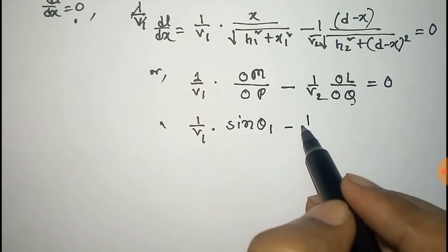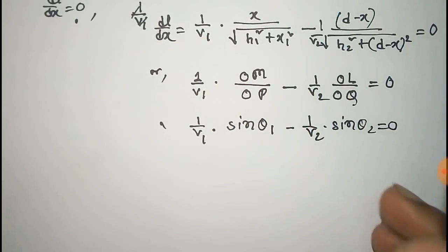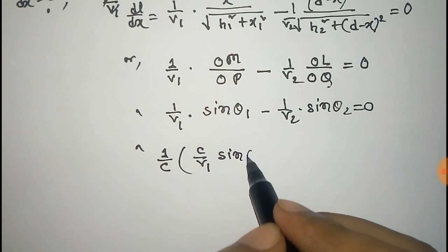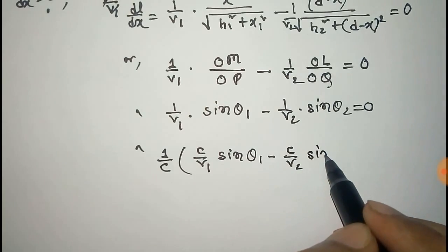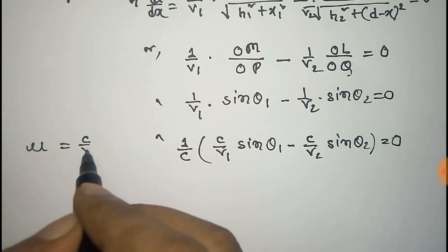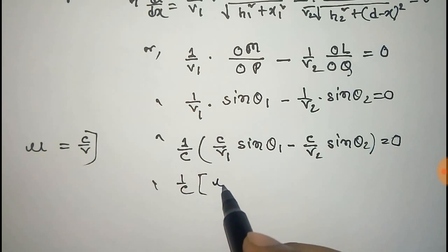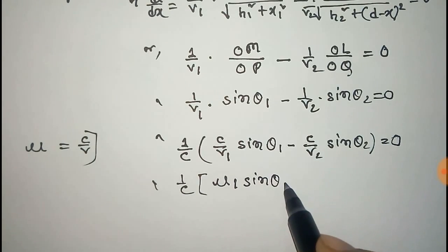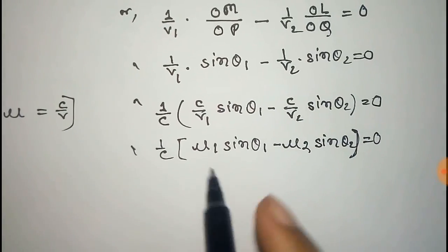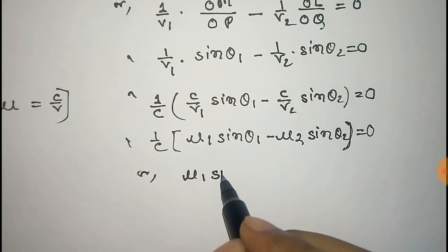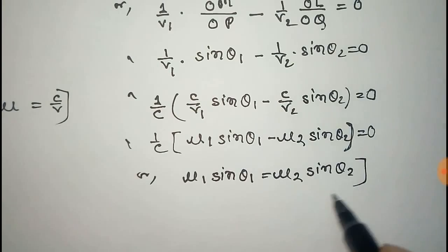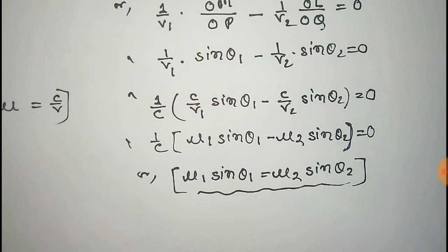That gives us 1 by V1 into sin theta1 minus 1 by V2 into sin theta2 equal to zero. Taking 1 by c common, we get c by V1 sin theta1 minus c by V2 sin theta2, where c is the velocity of light. Since the refractive index mu is equal to c by v, this becomes mu1 into sin theta1 minus mu2 into sin theta2 equal to zero, or mu1 sin theta1 equal to mu2 sin theta2. This is the well-known Snell's law of refraction, which we have derived from Fermat's principle.